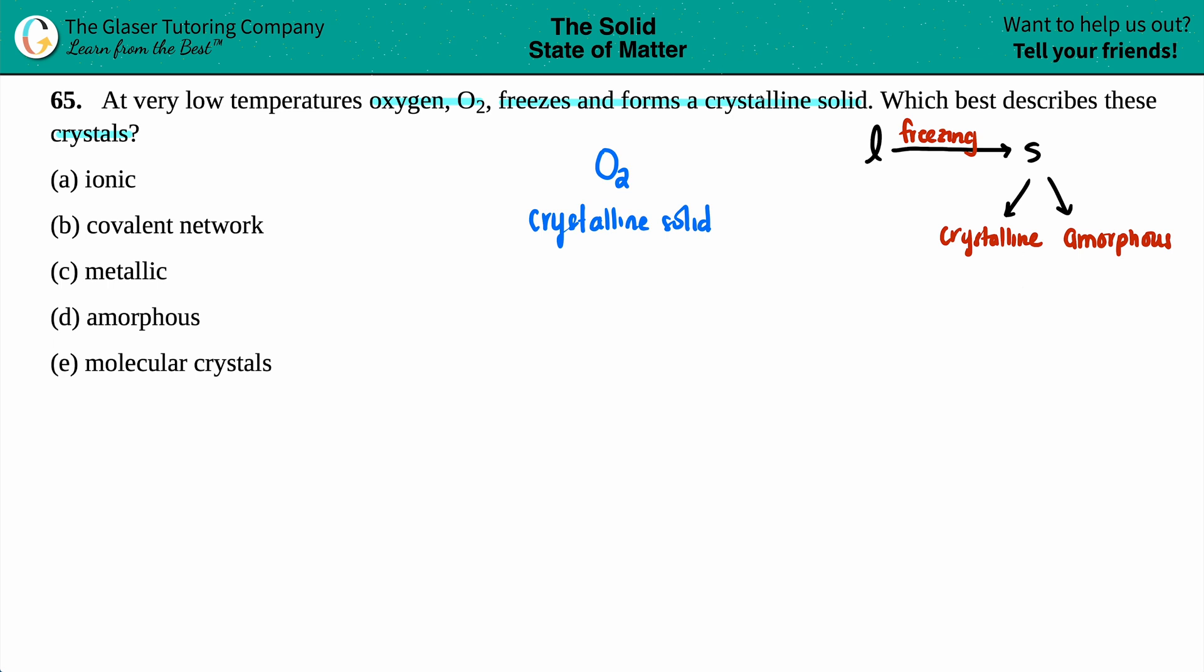So if it told us that it was forming a crystalline solid, the amorphous answer right here can't be amorphous because you're either in one of the two. You're either a crystalline solid or you're an amorphous solid. So we can kind of get rid of D right off the bat.